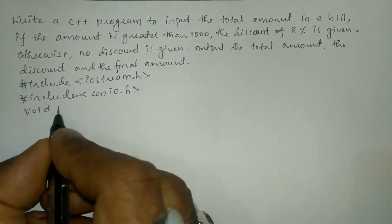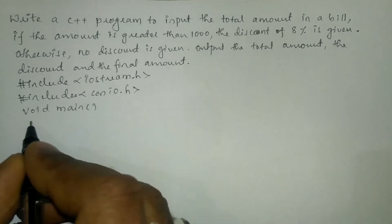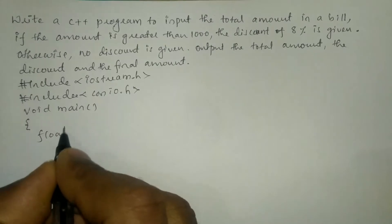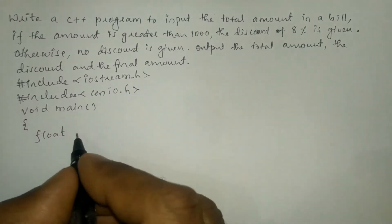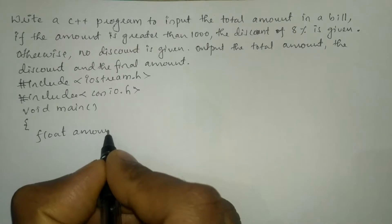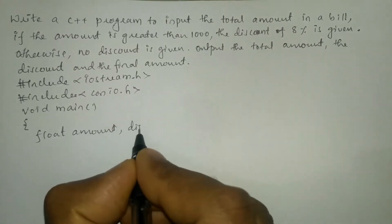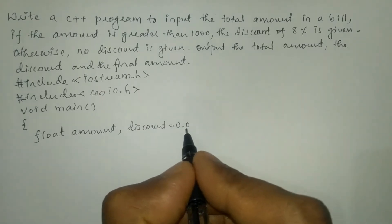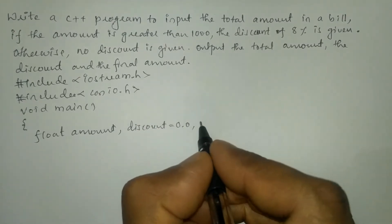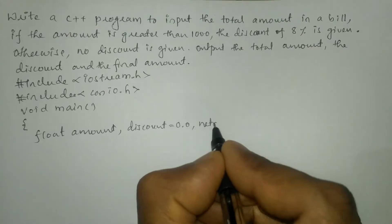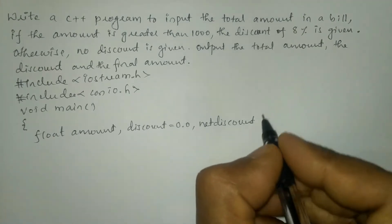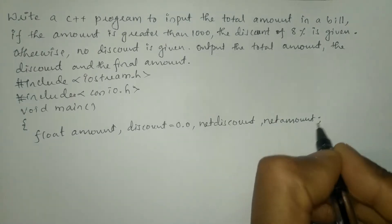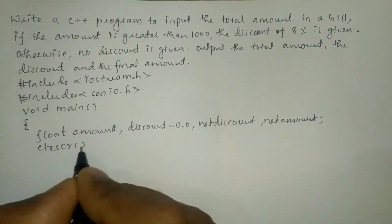Now let us write the void main function with a curly open brace. In the declaration section we are going to declare all the necessary variables using the data type float: amount, discount initialized to 0.0 — I'll explain why 0.0 was used here — then net_discount and net_amount. Then we write the clrscr() function.